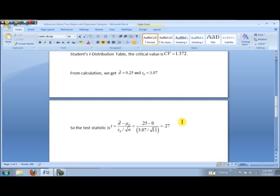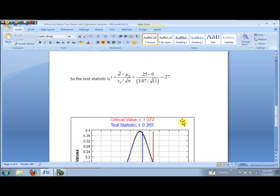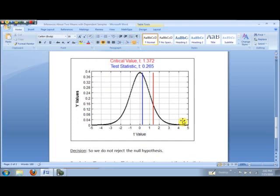So knowing that, I went ahead and made a graph of the data and for the T distribution. Notice here, the red line represents our critical value 1.372 from the student's T distribution table.